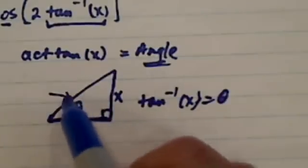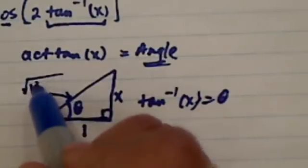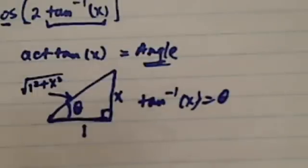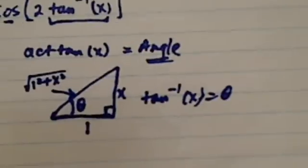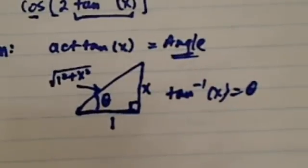In this right triangle, that gives us the hypotenuse is equal to 1 squared plus x squared. So if you have this picture in your mind, the above question becomes pretty easy.